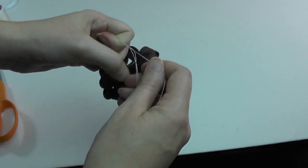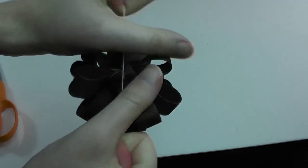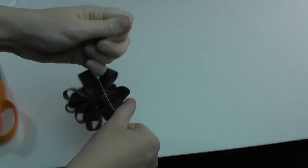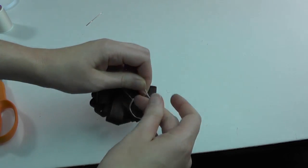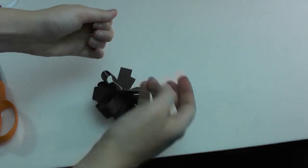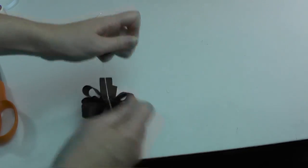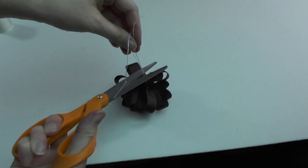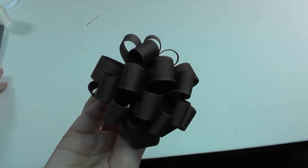We're going to pull really hard because it's going to form that poof that we need. I'm going to secure that a few times. And then I'm just going to clip off the excess, turn it over, and you've got a cute little puff.